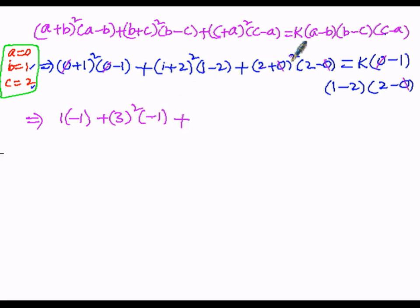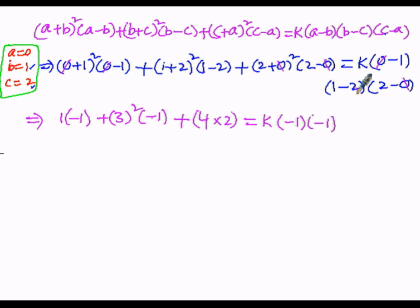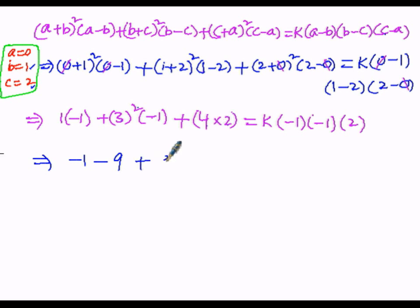Continuing the simplification: 4 · 2 = 8 on the left side. So we have: 1·(−1) + 9·(−1) + 4·2 = k·(−1)·(−1)·2. That gives: −1 − 9 + 8 = k · 2, which simplifies to −1 − 9 + 8 = 2k.